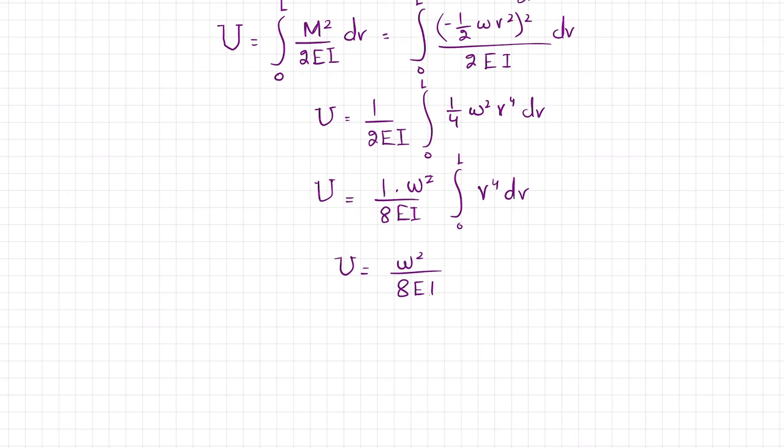So U equals W squared over 8EI times the integral from 0 to L of V to the fourth dV, which is V to the fifth over 5, with limits from 0 to L.